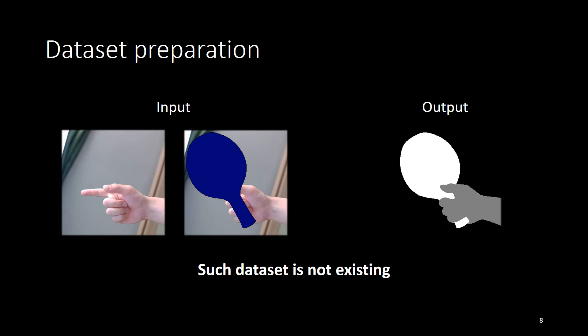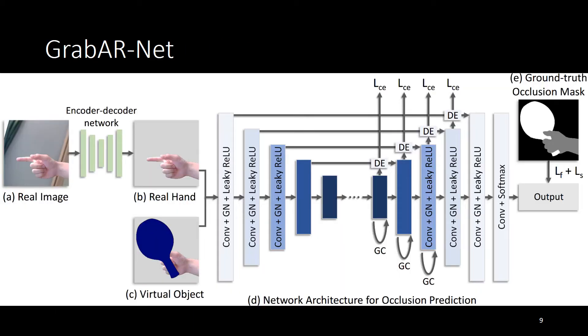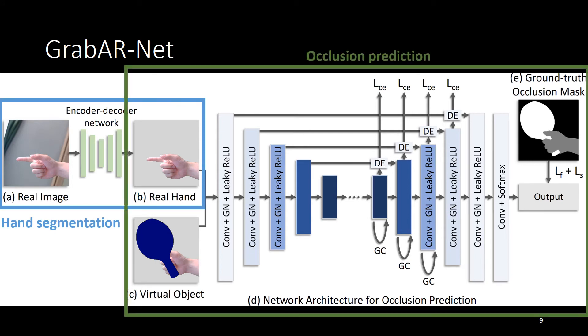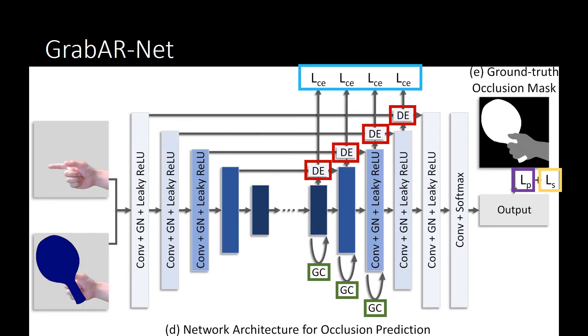Please refer to our paper for details of dataset collections. This is the structure of our GrabARNet. The network contains two parts. The first part is a hand segmentation part, and the second part is the occlusion prediction part. We designed two modules and three losses to improve the results. Please refer to our paper for further details.